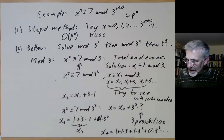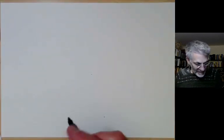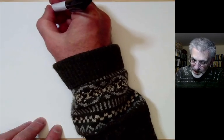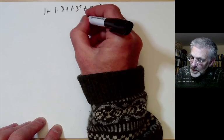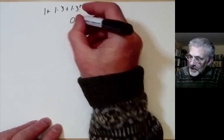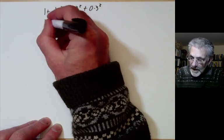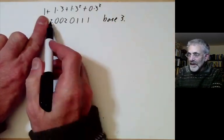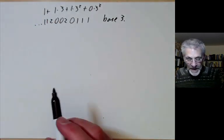We can keep producing more digits as long as our patience holds out. In fact, x₄ = 1 + 1·3 + 1·3² + 0·3³ looks like a number in base 3 — written as 1, 1, 1, 0 in base 3. We can continue, and each initial segment of digits gives a solution modulo the corresponding power of 3.